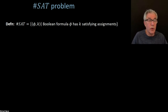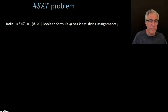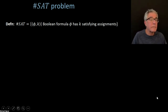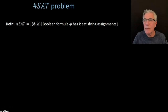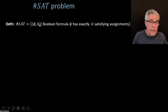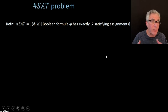What we're going to do is work with a problem that's almost like co-NP complete — it's going to be this number set problem. We'll see the connection with co-NP in a second. So the number set problem is pairs phi-comma-k, where phi has exactly k satisfying assignments. So this is really a problem of counting how many satisfying assignments you have in a formula.